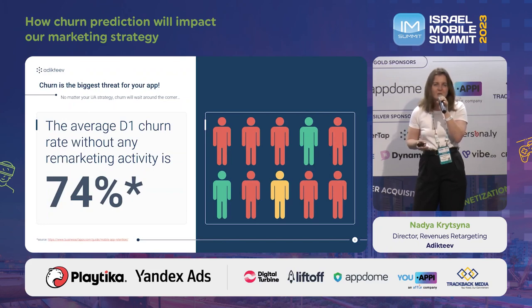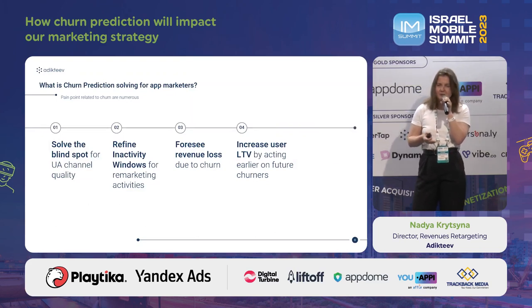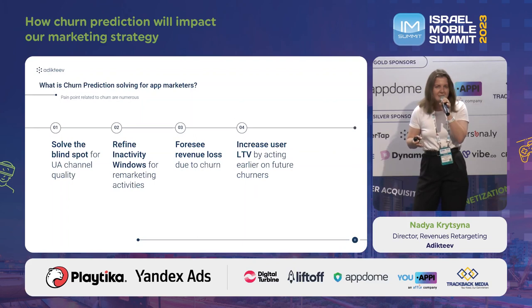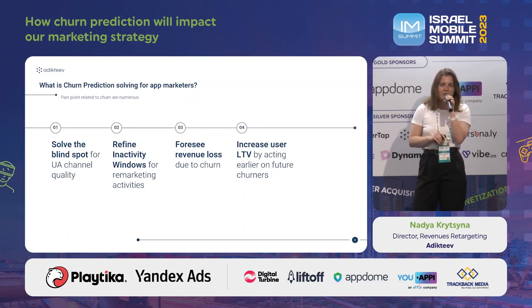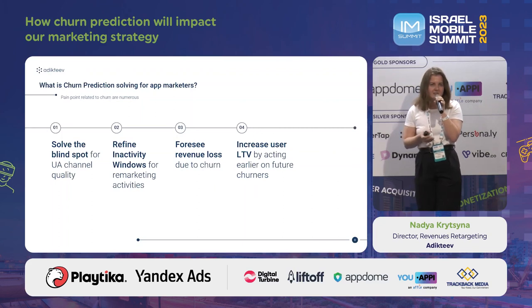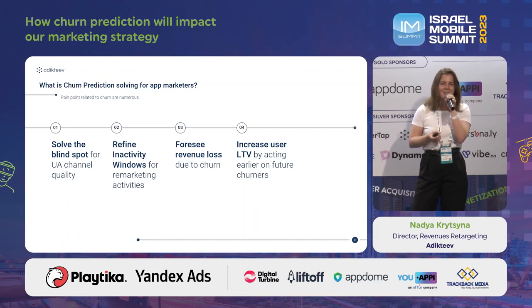Retaining users is cheaper than reacquiring them. Churn prediction actually solves a lot of issues: first, it complements user acquisition at the right time by reinforcing their interest in the right moment and keeping them safe in the application. It also gives you flexibility in stepping back from the inactivity window and finding a more effective point to re-engage users at the time when they should see the ad — not to leave the app. You can also foresee financial losses in case you are not bringing the user back.